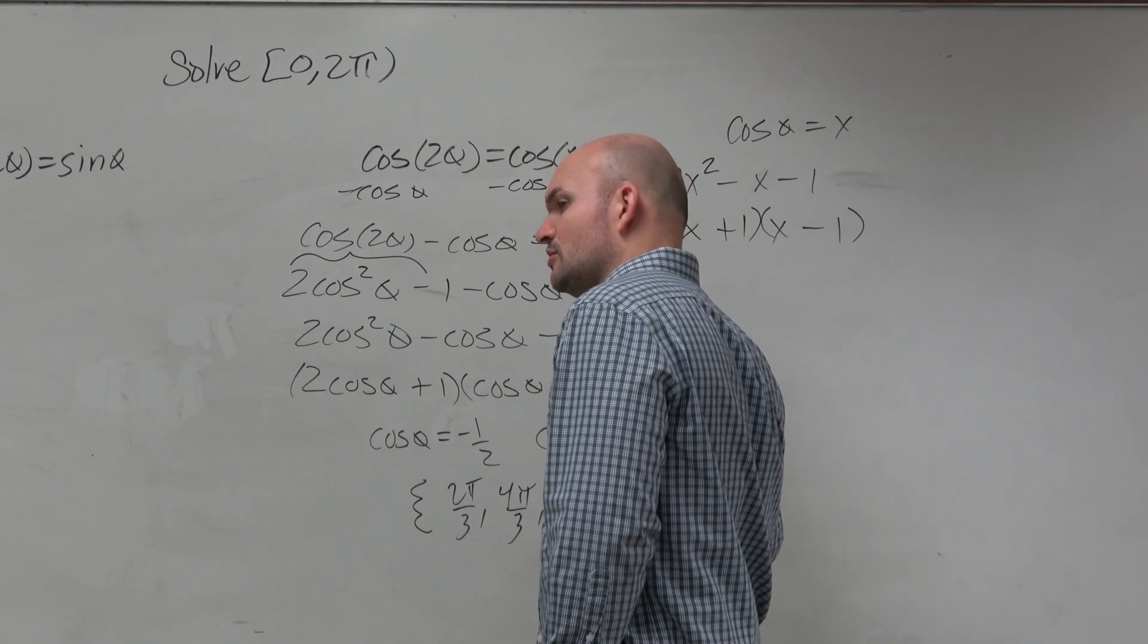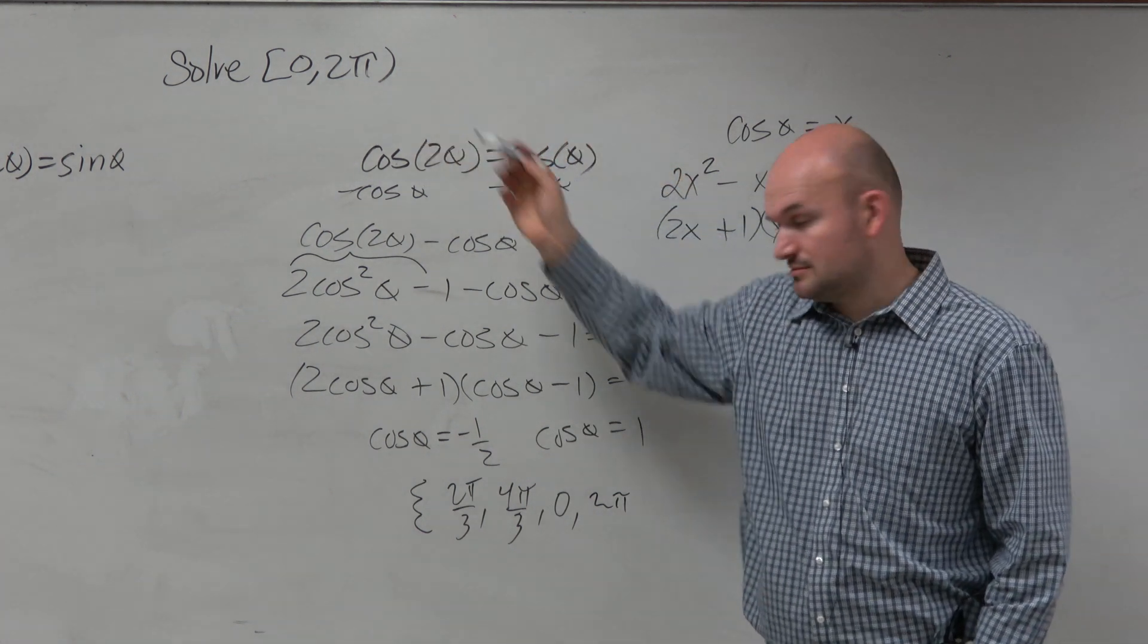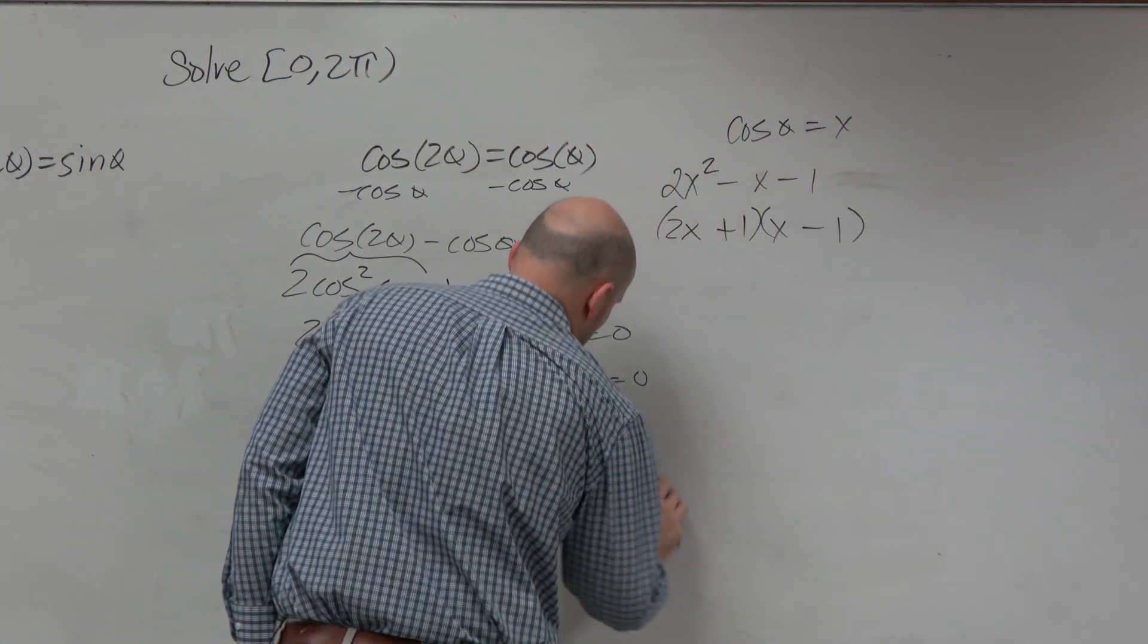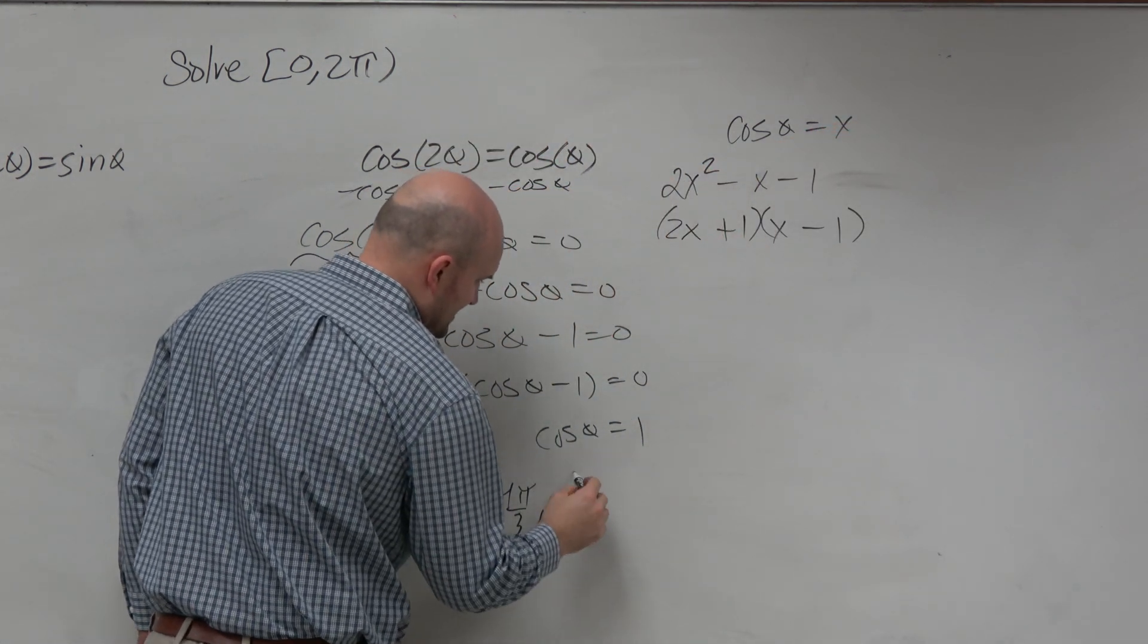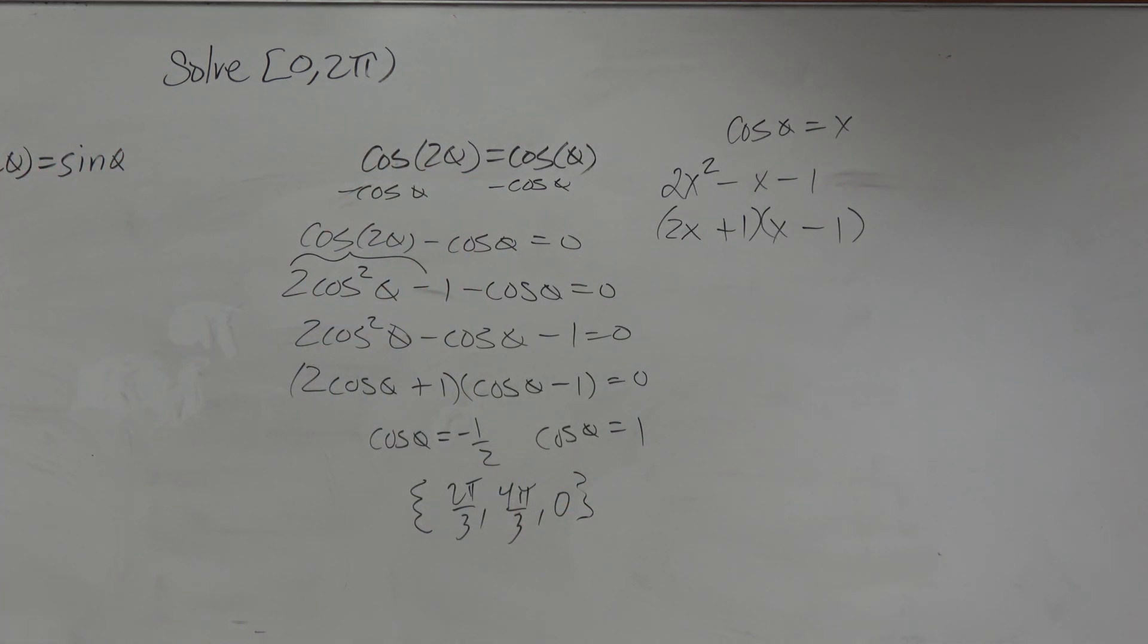And should I include 2 pi? No. No, because 2 pi is not included, right? So just include 0. And again, guys, I'm getting these answers based off of the unit circle. Anybody have a question?